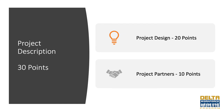The project description must clearly describe how the design of the proposed project addresses the needs identified in the statement of need, along with how it promotes the goals of the WORK initiative to create economic prosperity and gainful employment opportunities for eligible residents in impacted DRA or ARC regions. Additionally, the project description must define the partnerships that will ensure the success of the efforts. The project description section is comprised of project design worth 20 points and project partners worth 10 points, for a combined 30 points.